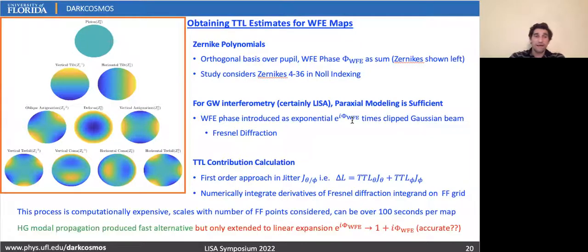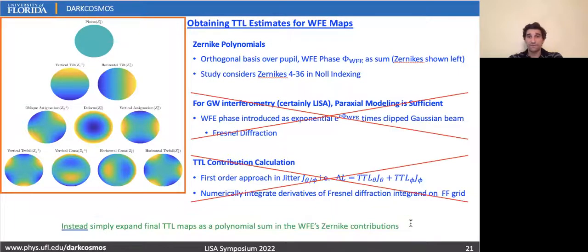We tried every which way, and we did get some improvement in speed with Hermite-Gauss-based propagation of beams, but only when we could analytically derive the decomposition components, which only occurred when we expanded that e^(iφ) to first order. We weren't sure how accurate that was, but this did bring up the idea that, what if instead of going through that expensive numerical integration associated with the propagation, we just write the final tilt length as a polynomial in the Zernike contributions to the wavefront error.